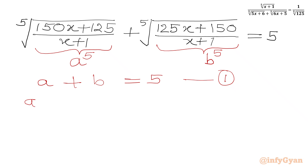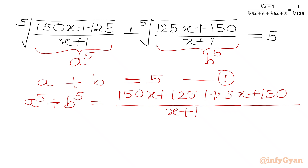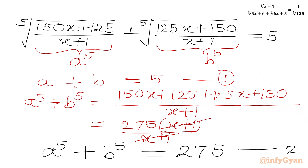Now I will find the value of a⁵ plus b⁵. With the common denominator x+1, in the numerator we simply add (150x+125) plus (125x+150), which gives 275 times (x+1). The denominator is (x+1), so it cancels out. We get equation number 2: a⁵ plus b⁵ equals 275.